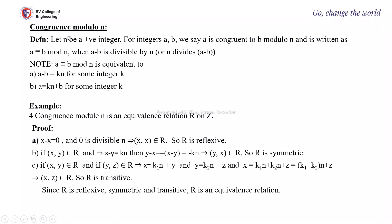Next: congruence modulo N. Let N be a positive integer. For integers a and b, we say a is congruent to b modulo N, written as a ≡ b (mod N) — indicated by three lines — when a minus b is divisible by N, or N divides a minus b. So, a ≡ b (mod N) is equivalent to a minus b is divisible by N, meaning a minus b is a multiple of N for some integer K. Transferring B to the right-hand side gives a = KN + b. Whenever a = KN + b, we say a is congruent to b modulo N.